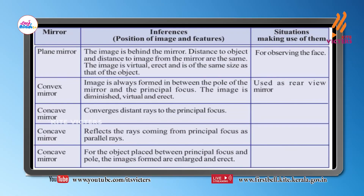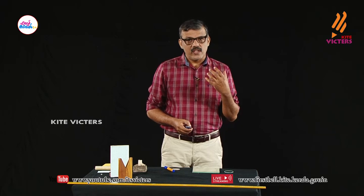For a plane mirror, the image is formed behind the mirror. The distance to the object and the distance to the image from the mirror are equal. The image is virtual, erect, and of the same size as the object. One common use of a plane mirror is to observe your face.